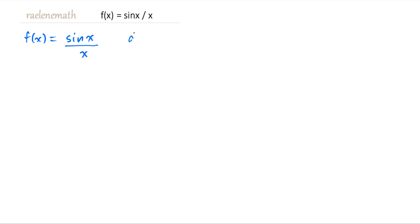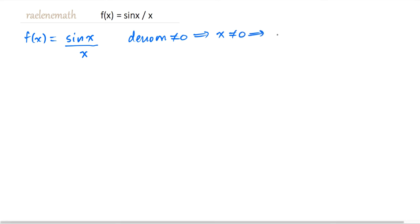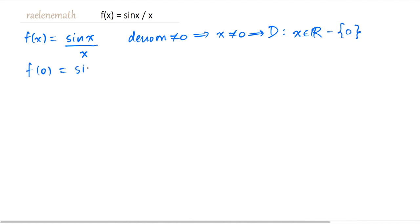We first consider the domain. We know that denominators can't be equal to 0, which means that x can't be equal to 0, which means that the domain of this function is all reals except for 0. So if we substitute 0 in for x, we would see that the y value is sine 0 over 0, which is 0 over 0, which is indeterminate.